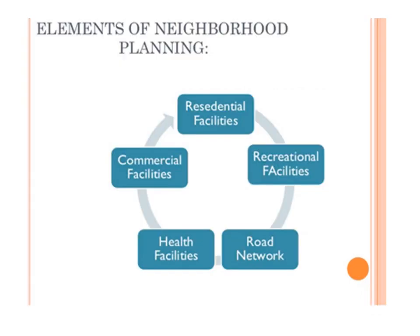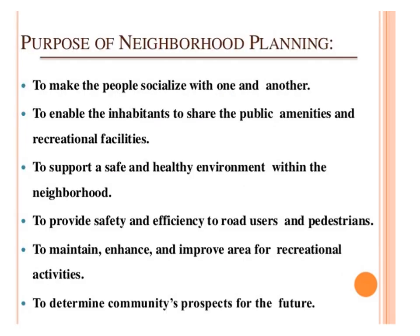This slide refers to elements of neighborhood planning and their interrelationship. The elements are residential facilities, recreational facilities, road network, health facilities, and commercial facilities. The purposes of neighborhood planning are: to make people socialize with one another; to enable inhabitants to share public amenities and educational facilities; to support a safe and healthy environment; to provide safety and efficiency to road users and pedestrians; to maintain and enhance areas for recreational activities; and to determine the community's prospects for the future.